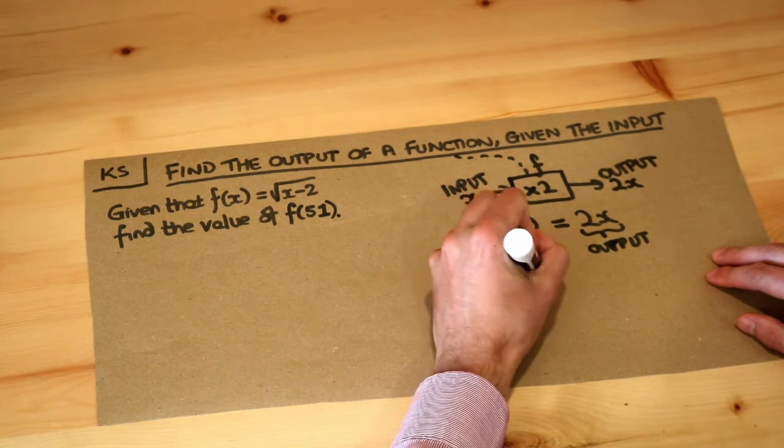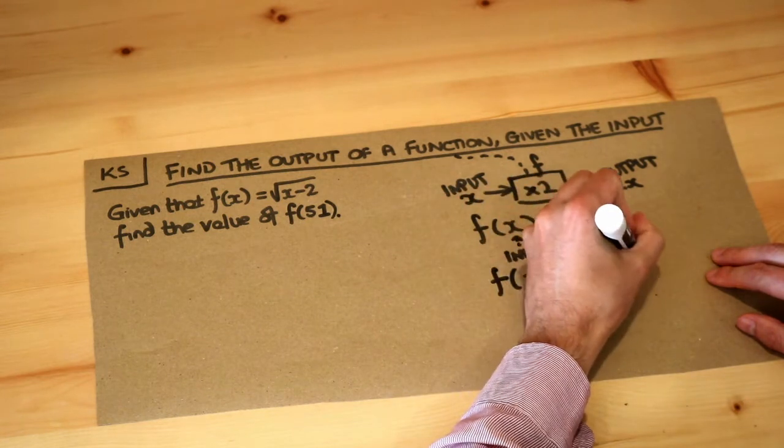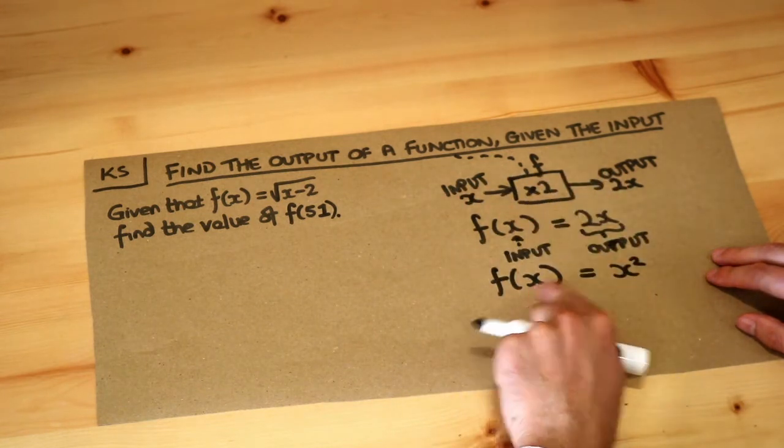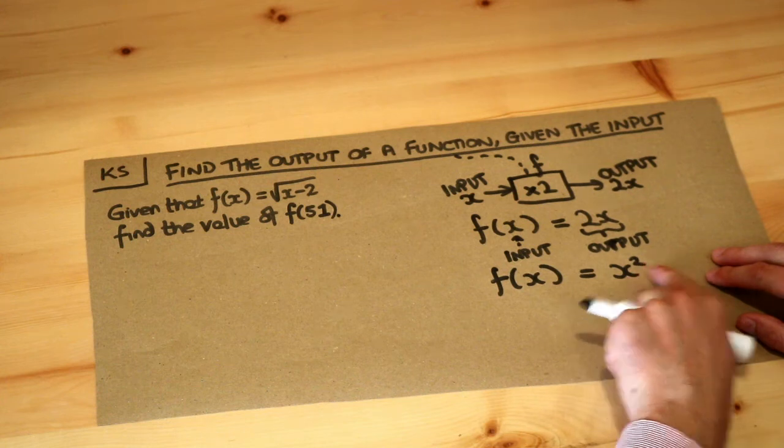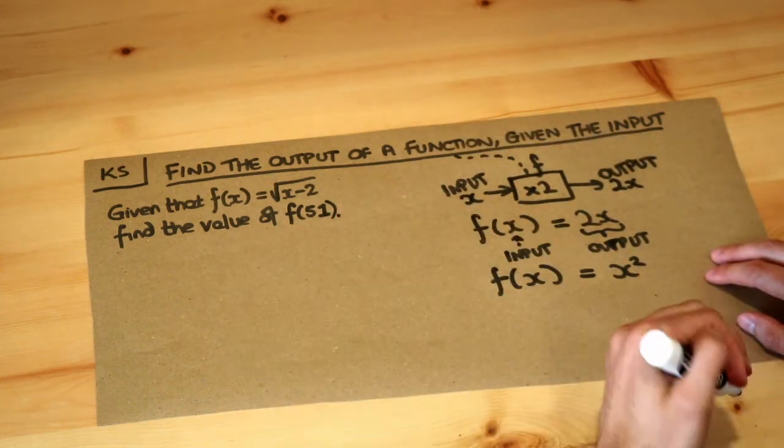If, for example, I had f(x) = x², that's saying I'm taking an input x and I'm squaring the input to get the output.